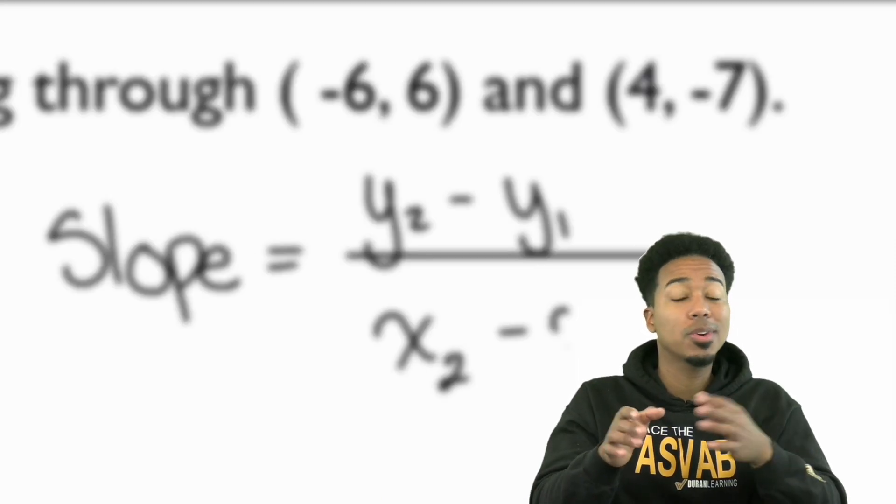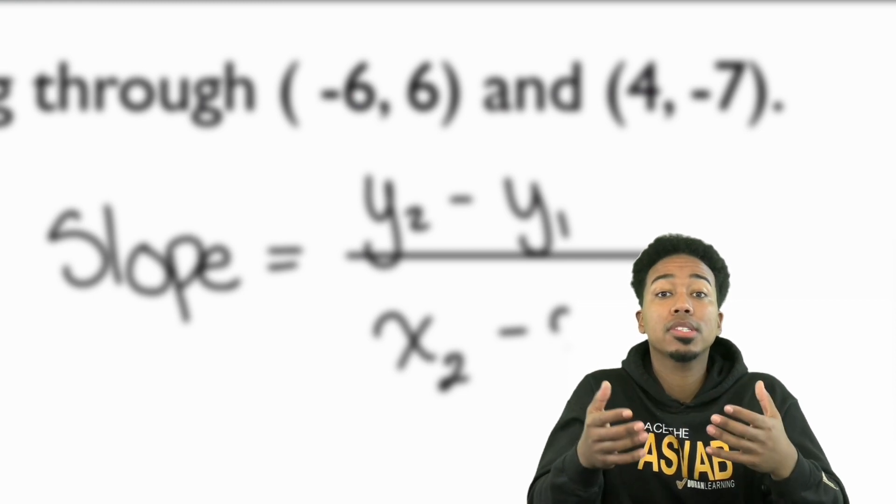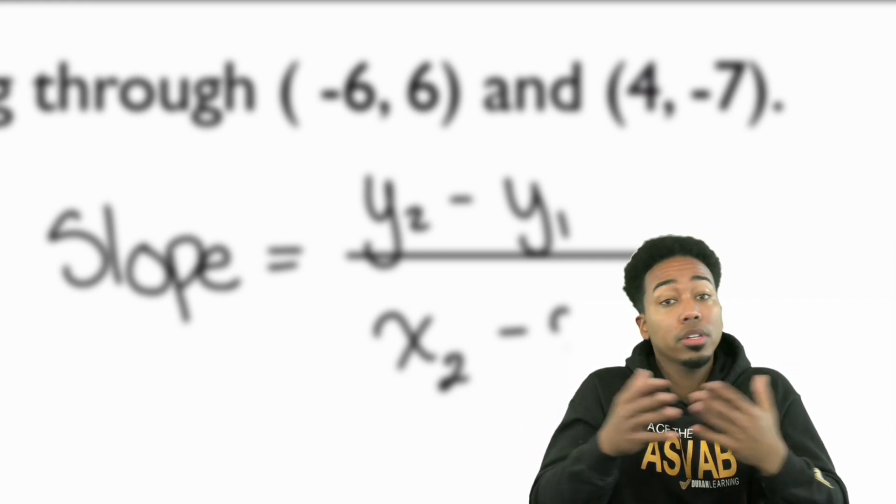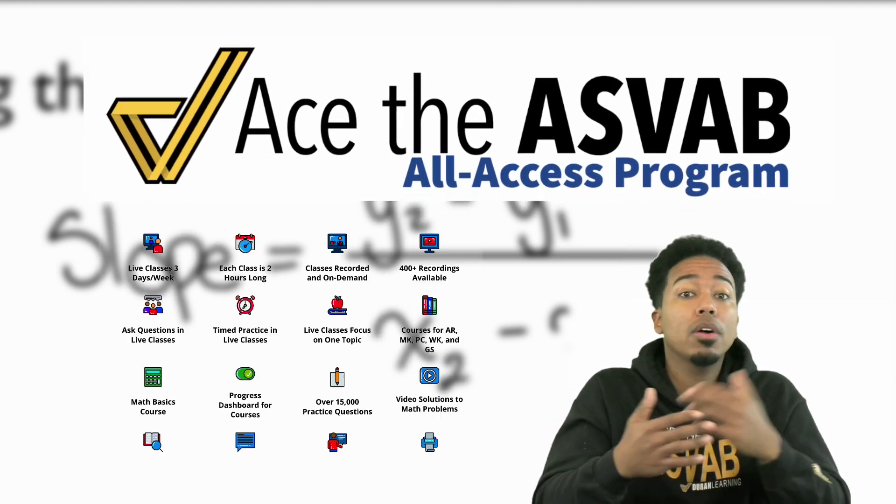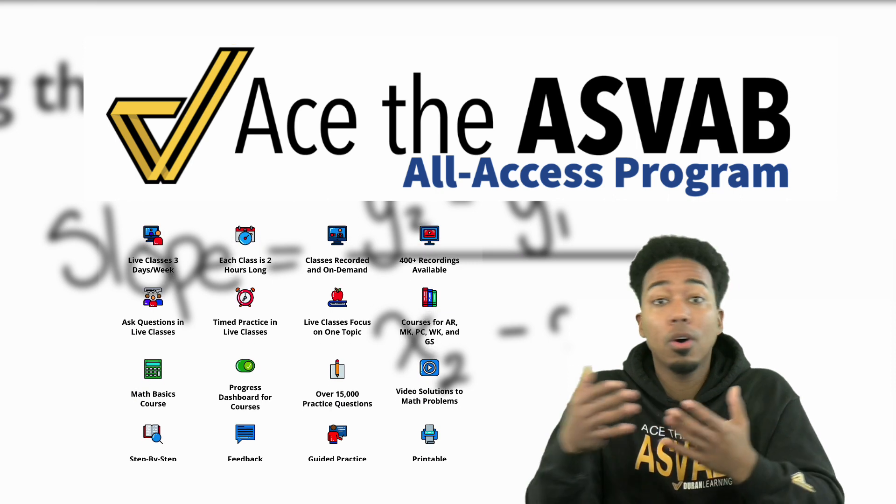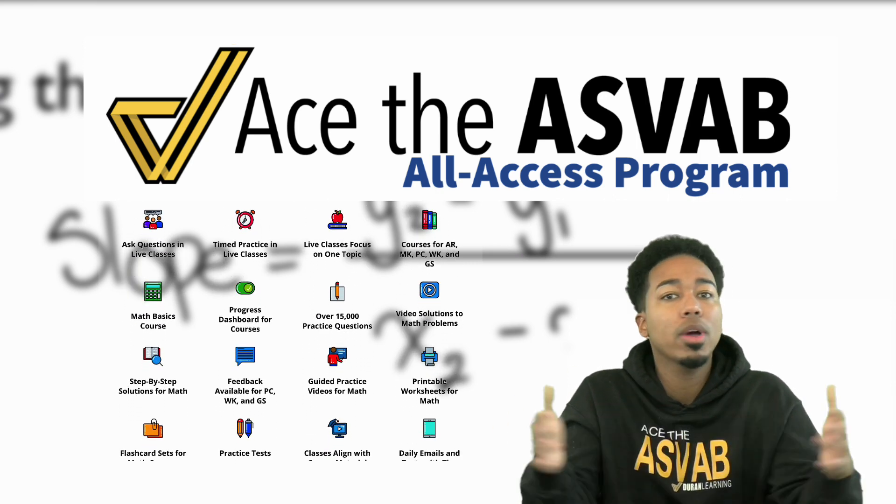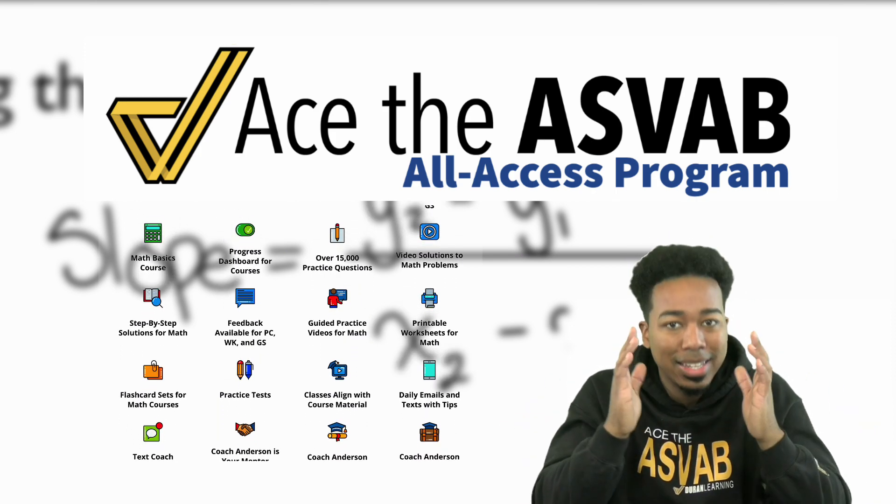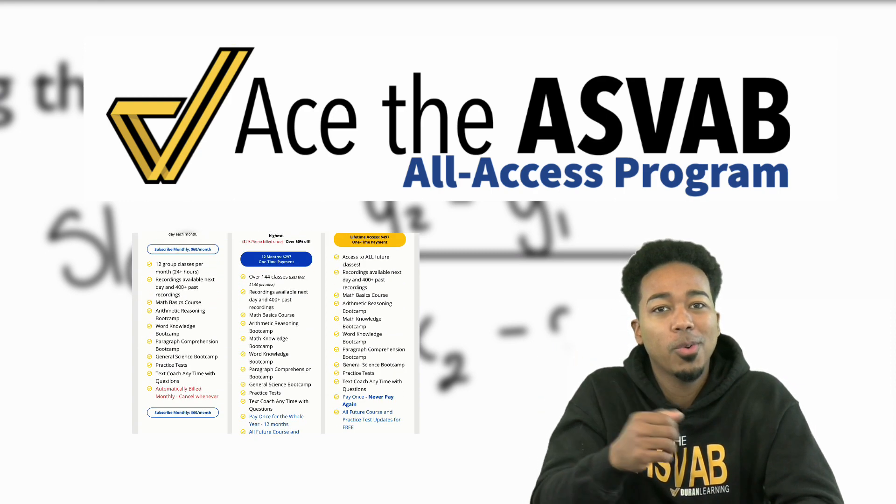And before we continue, one of the main frustrations that so many people have with the ASVAB is not knowing what to study and how to study to begin with. So if you're one of those people that can do a good job if everything's lined up for you, then go ahead and join our program. We have all the classes, all the recordings, all the courses with practice questions with videos, and you can text me all the way up until you pass. So that's how it works. It's very simple, straightforward, and it gets you to the score and the job you want. Check out the link in the description of this video to learn more and sign up now.